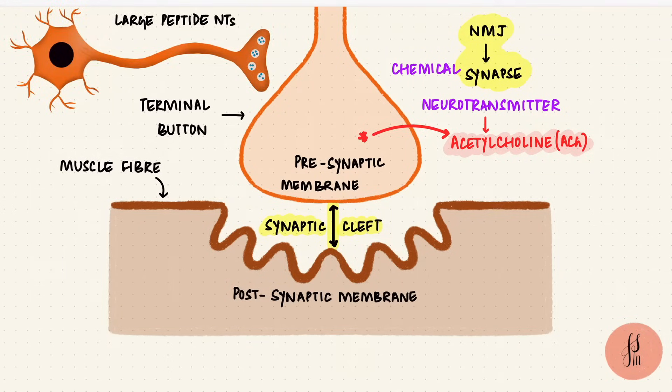You see, larger peptide neurotransmitters get synthesized in the cell body, packaged into vesicles by the Golgi apparatus, and they're then transported down the axon by microtubules to reach the terminal.